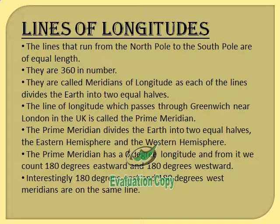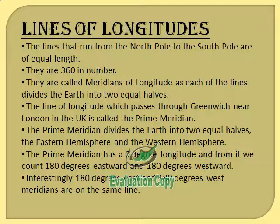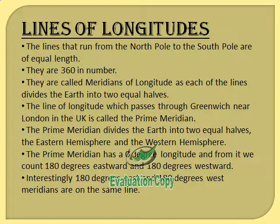The line of longitude which passes through Greenwich, near London in the UK, is called the prime meridian. One very important thing to keep in mind is that the prime meridian is also an imaginary line, like the equator — you will not find any line drawn on the earth. The prime meridian divides the earth into the eastern hemisphere and the western hemisphere. Like the equator, the prime meridian also has a zero degree — this is zero degree longitude — and from it we can count 180 degrees eastward and 180 degrees westward. Both these lines merge: 180 degree east and 180 degree west are on the same line.